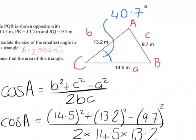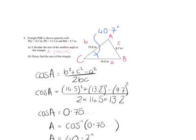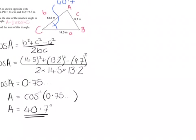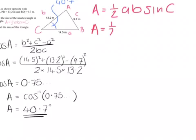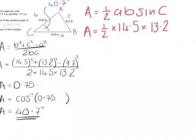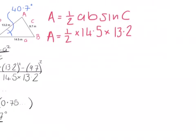What we can do now is substitute our information into our area formula. So we'll move over and do this over here, giving us a bit more space. So area A is a half times side A times side B times sine of angle C. So A equals a half times A, which is 14.5, times B, which is 13.2, multiplied by sine C, which is sine 40.7.